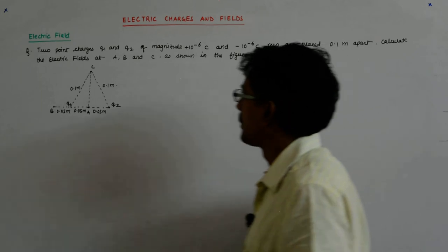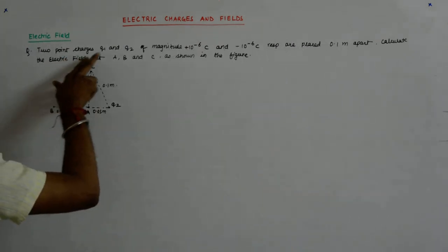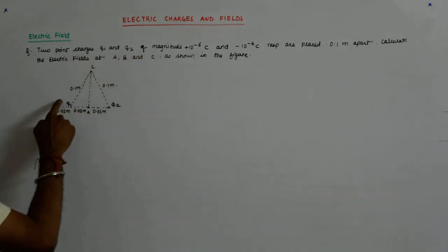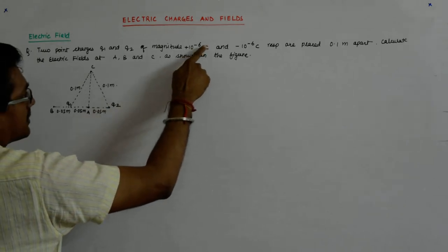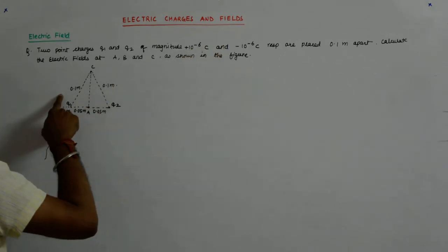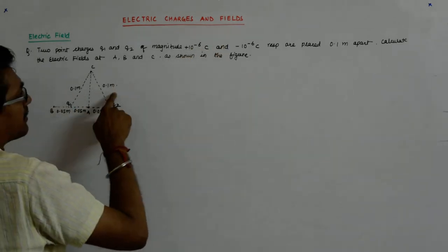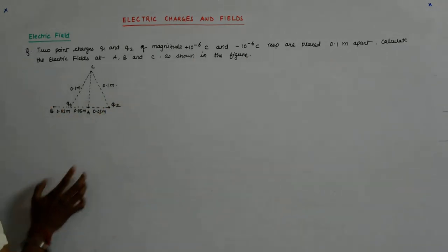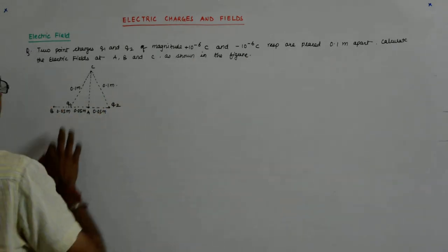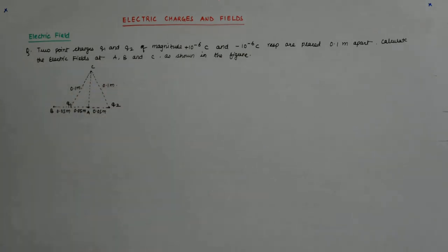Let us try to solve this problem on electric field. We have two point charges Q1 and Q2 as shown in the figure: 10 to the minus 6 coulomb, that is 1 microcoulomb, and minus 1 microcoulomb, placed 0.1 meter apart. We have to find out the field at A, B, and C as shown in the figure.